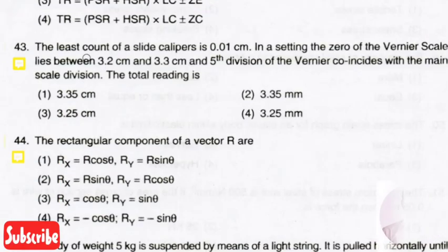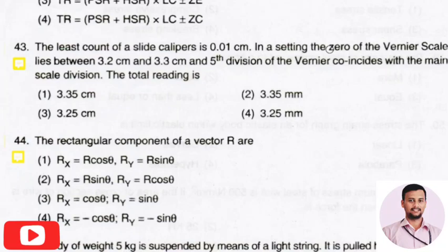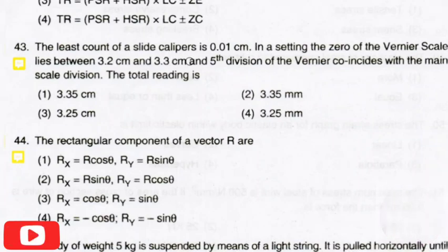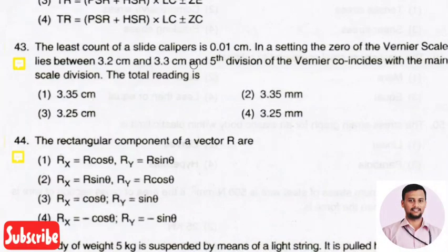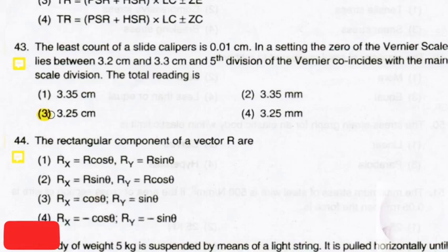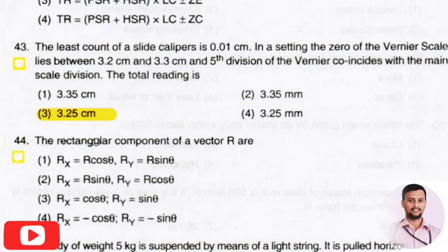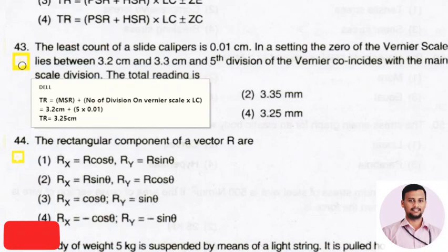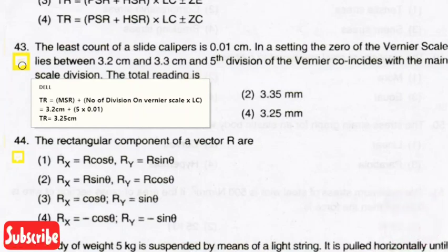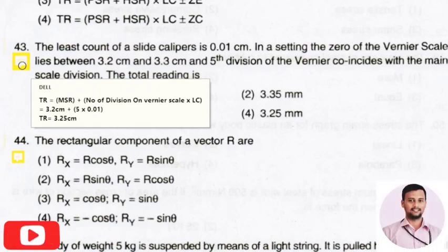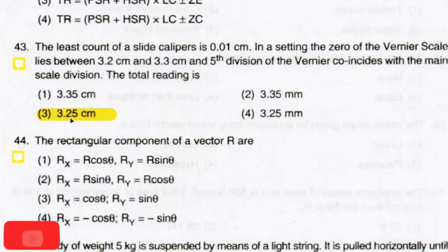The next question: the least count of a slide caliper is 0.01 cm. The Vernier scale lies between 3.2 cm and 3.3 cm, and the fifth division of the Vernier coincides with the main scale division. The right answer is option 3, that is 3.25 cm. Total reading = main scale reading + (number of coinciding divisions × least count) = 3.2 + (5 × 0.01) = 3.25 cm.